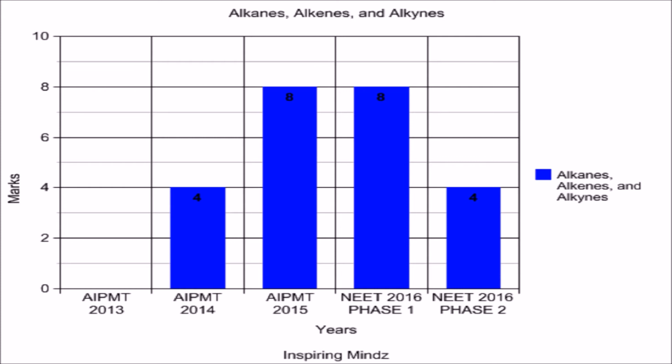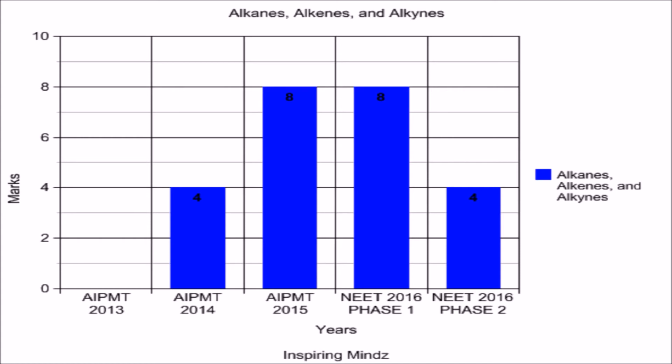In AIPMT 2014 and NEET 2016 phase 2 the weightage was 4 marks, and in AIPMT 2015 and NEET 2016 phase 1 the weightage was 8 marks. Now for Alkyl Halide and Aryl Halide: in AIPMT 2015 this chapter showed the highest weightage of 12 marks. In NEET 2016 phase 2 the weightage reduced to 4 marks, while in AIPMT 2013, 2014, and NEET 2016 phase 1, no questions were asked.